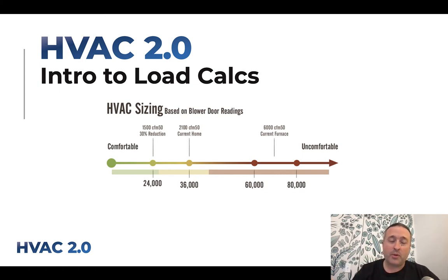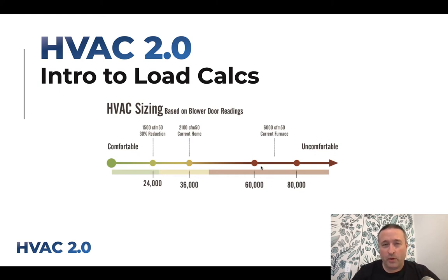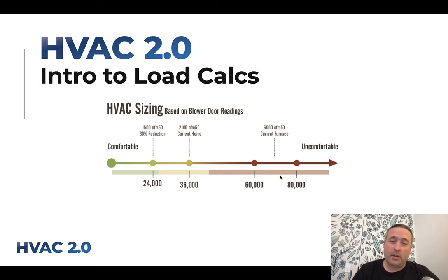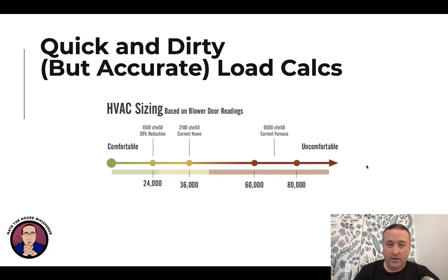This is probably going to be fairly different from what you've thought about in the past. This chart was developed for the comfort consult report — note how big of a swing there is in load calcs. This is looking at the same house, and these are realistic numbers we've seen. You can look at a house and the load might be two tons, and the load might be six. It's a huge variance.